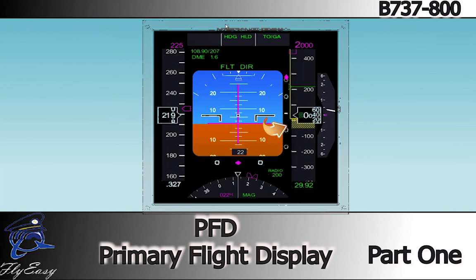A landing altitude reference bar is displayed along the inner edge of the altitude indication. The reference bar indicates the height above the touchdown zone for the selected runway. A white bar is displayed from 1,000 to 500 feet above landing altitude; an amber bar is displayed from 500 feet to the landing altitude.